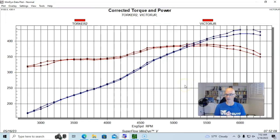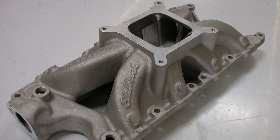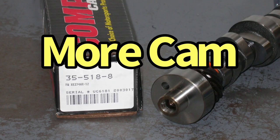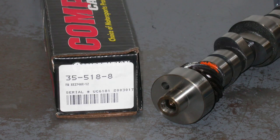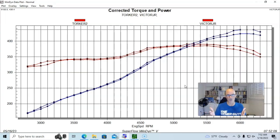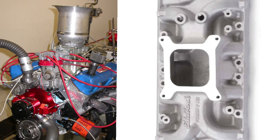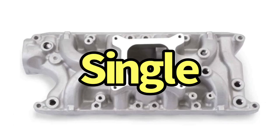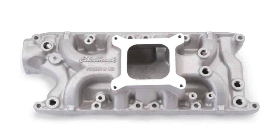This kind of shows us why the Victor Jr is the more popular of the two intake manifolds, because it does everything essentially that the Torker 2 does, it just seems to do it better. And if we had a combination with even more camshaft and we were running more RPM, the Edelbrock Victor Jr would really kind of come into its own because I think it's a superior single plane intake manifold compared to the Torker 2, and maybe that's why it's more popular. Now let's take a look and see what happens when we compare the dual planes to the single planes and figure out which one you guys would want to run on your street strip motor.